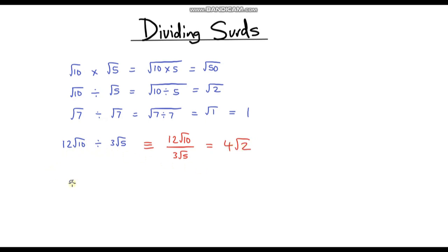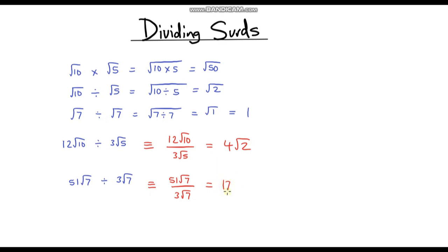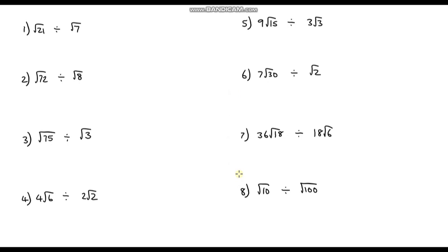Let's do one more: 51 root 7 divided by 3 root 7. Writing this as a fraction — 51 root 7 over 3 root 7. Deal with the integers first: 51 divided by 3 is 17. Now the surds: root 7 divided by root 7 is 1. So 17 times 1 is just 17. Our answer is 17.